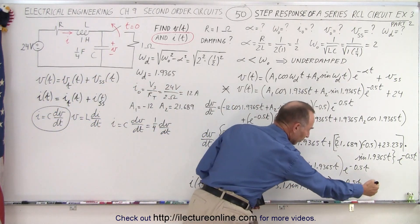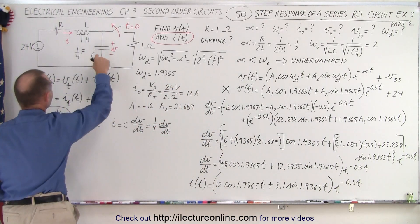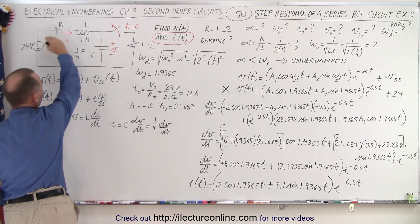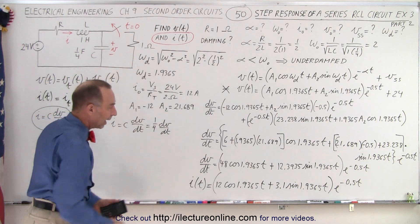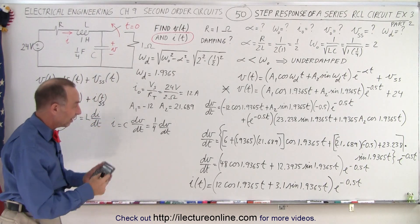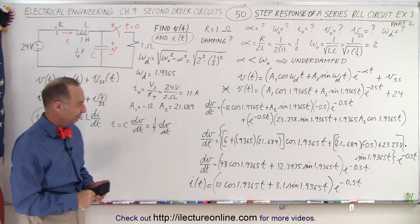Notice there's no steady state current, it's only a transient portion, because eventually, since this is a series circuit, the capacitor will fill full of charge, no current will flow through the circuit again, and the current will simply stop as enough time has elapsed. And that's the equation for the current in the circuit. And that is how it's done.